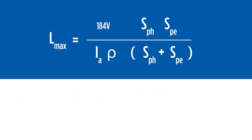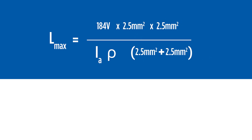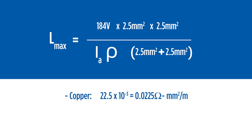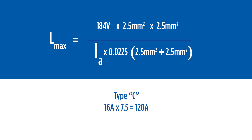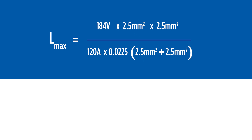Let's put some numbers into our equation. The selected cable will have 2.5 millimetre squared copper phase and protective earthing conductors. The resistivity of copper conductors is represented by rho in the equation, giving a calculation value of 0.0225 ohms per millimetre squared per metre. The selected protective device is a 16-amp C-type circuit breaker with an instantaneous tripping current value of 120 amps. With all values entered, the maximum length calculation gives an answer of 85 metres.